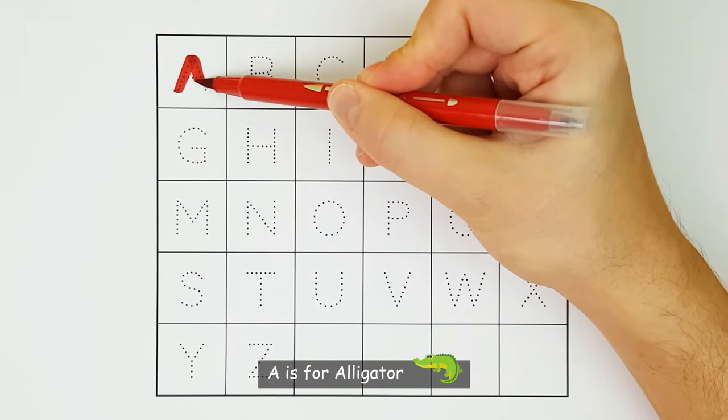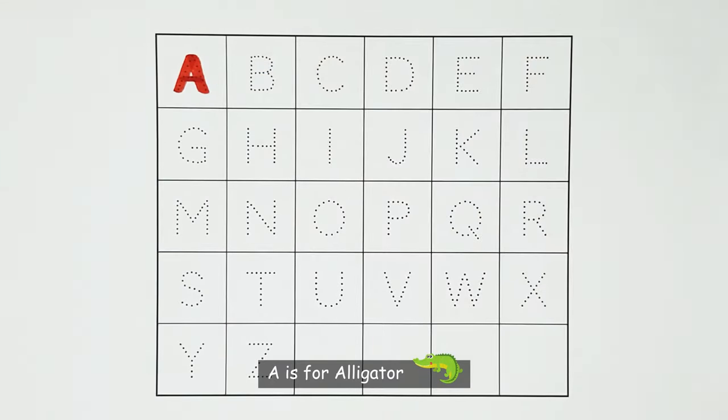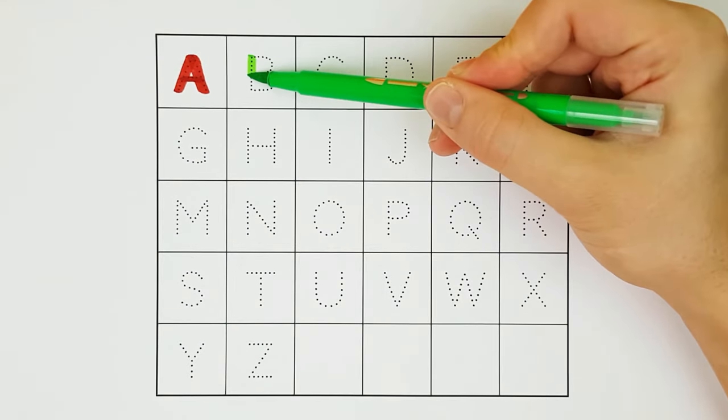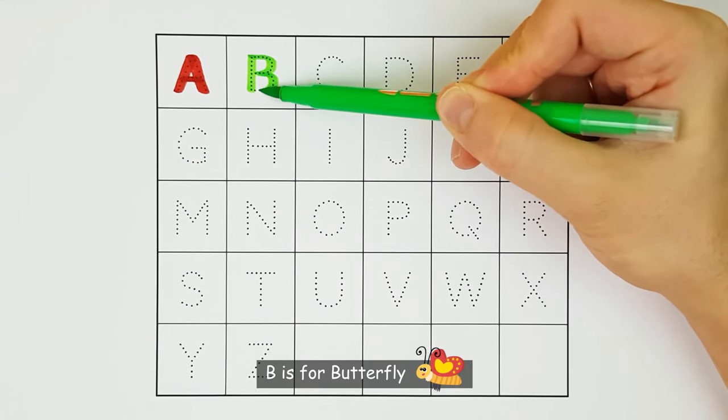A. A is for alligator. A. B. B is for butterfly. B.